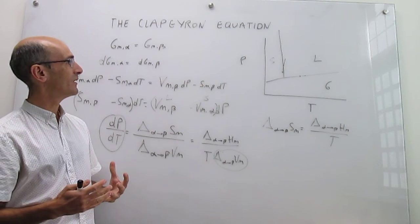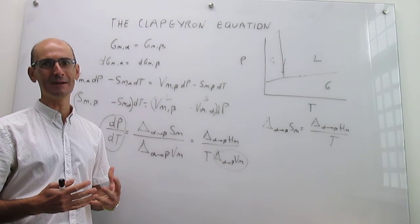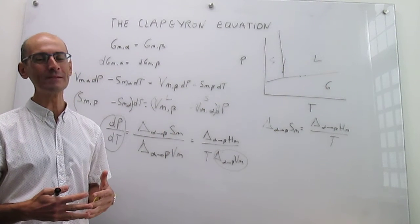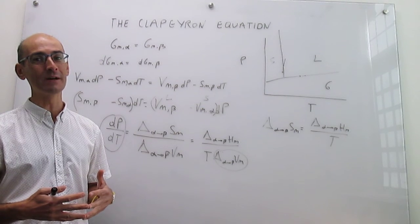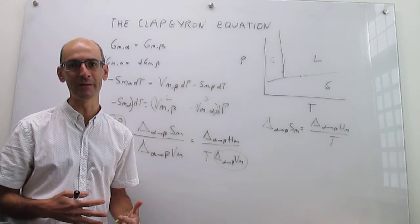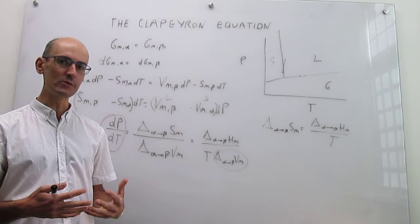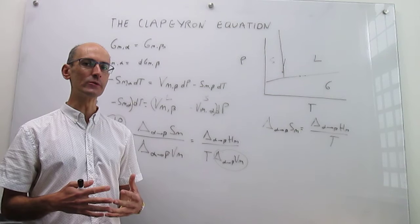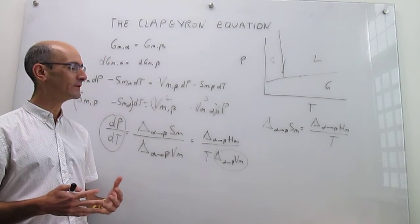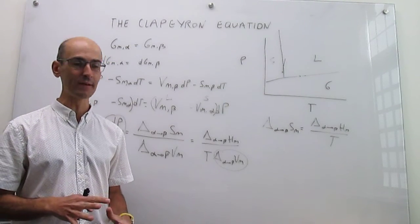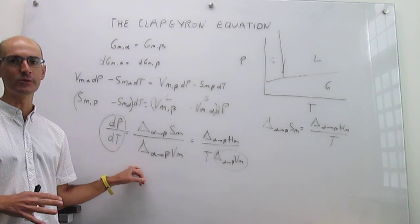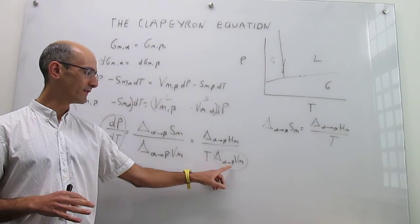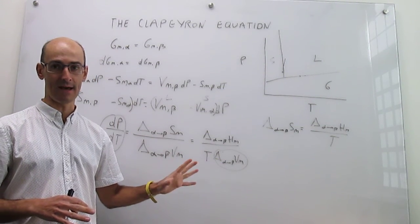In this video, we have described quantitatively how the phase boundaries can be calculated using thermodynamic arguments, introducing the Clapeyron equation. In the next video, we're going to see a slight modification — a simplification of the Clapeyron equation — which is very useful when the final phase you're transitioning to is the gas phase.